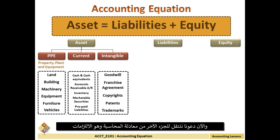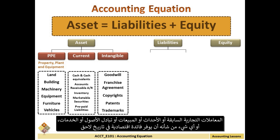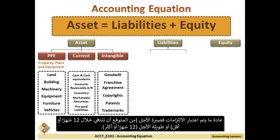Now let's move to the next part of the accounting equation, which is liabilities. A liability is an obligation between one party and another that is not yet completed or paid for. In accounting, a financial liability is also an obligation, but is more defined by previous business transactions, events, sales, exchange of assets or services, or anything that would provide economic benefit at a later date. Liabilities are usually considered short-term if expected to be concluded in 12 months or less, or long-term if for more than 12 months.